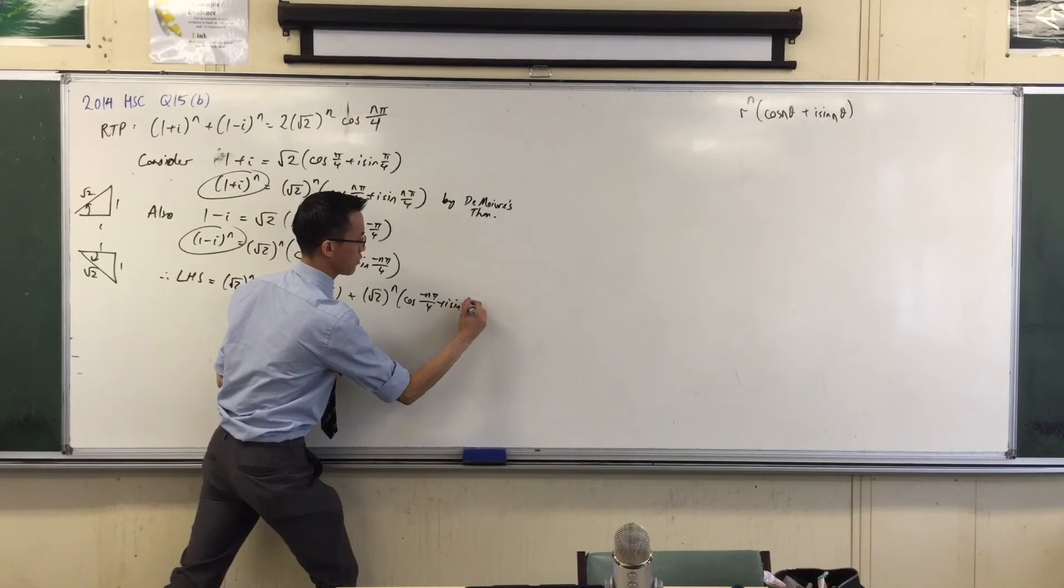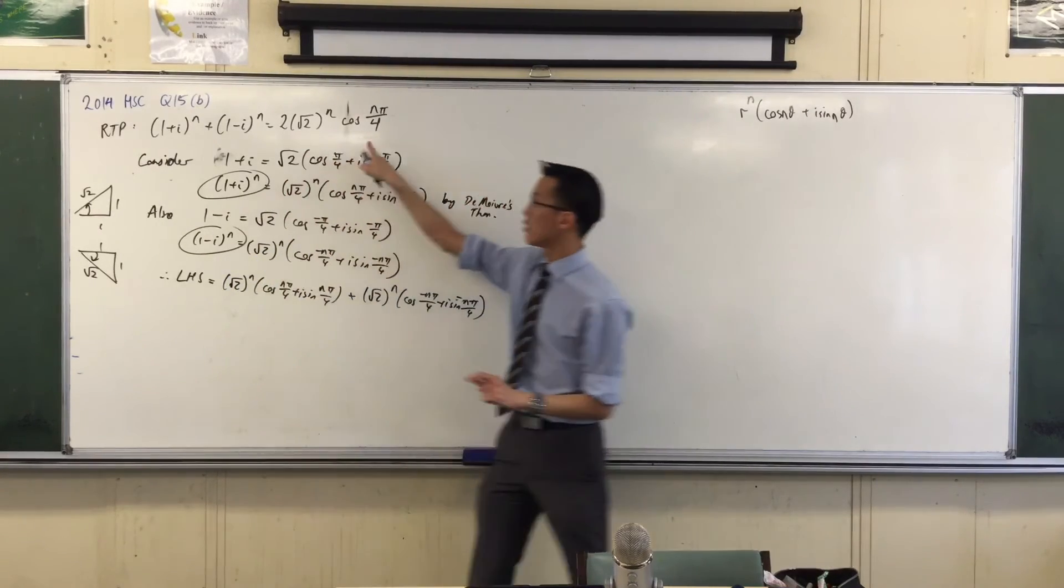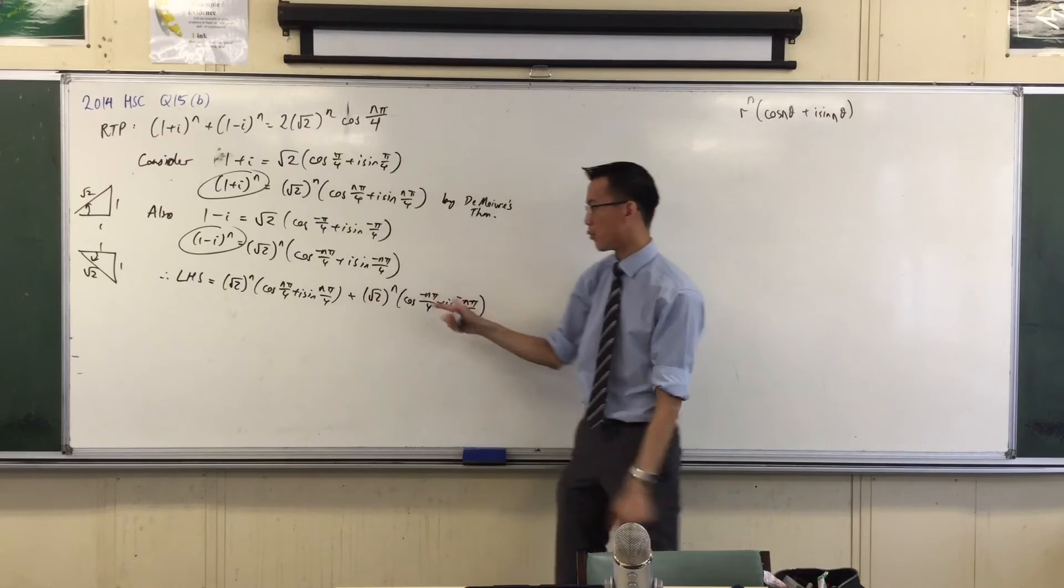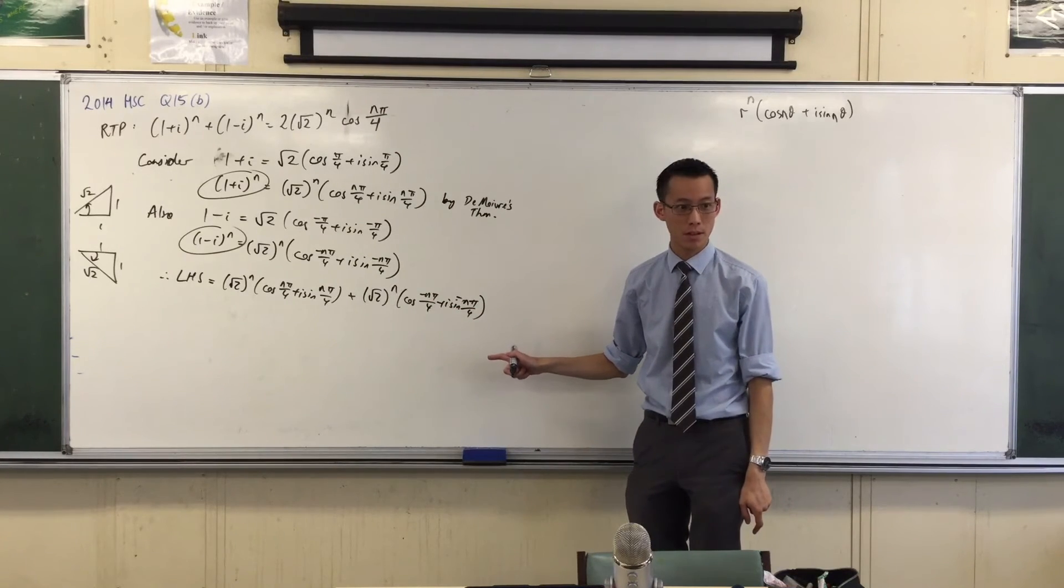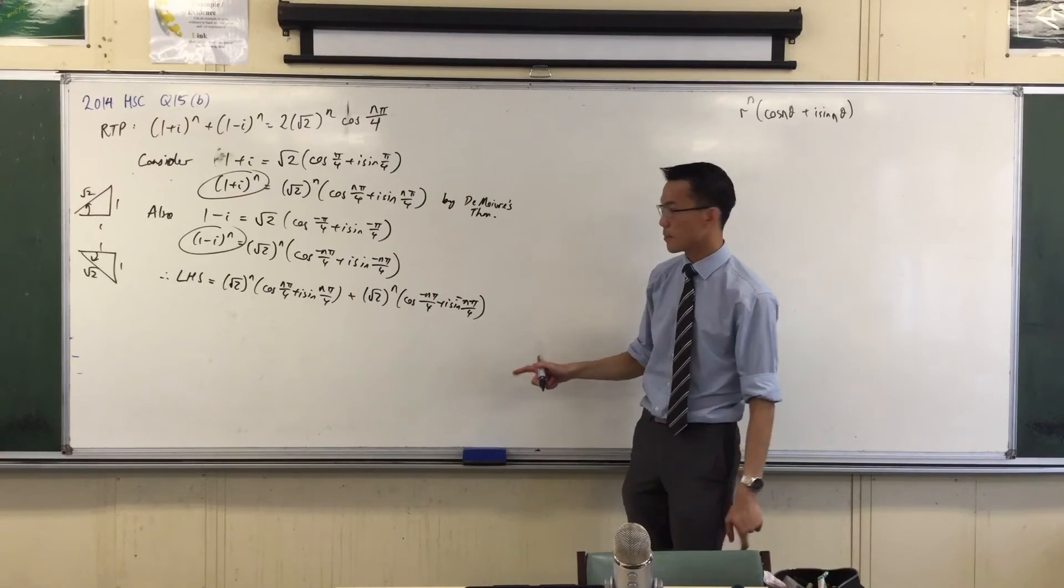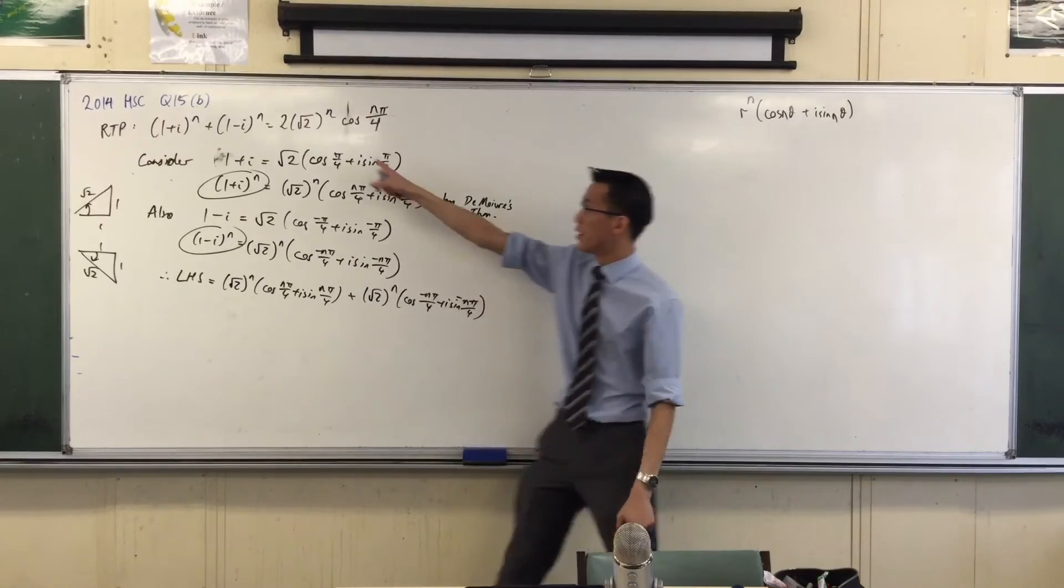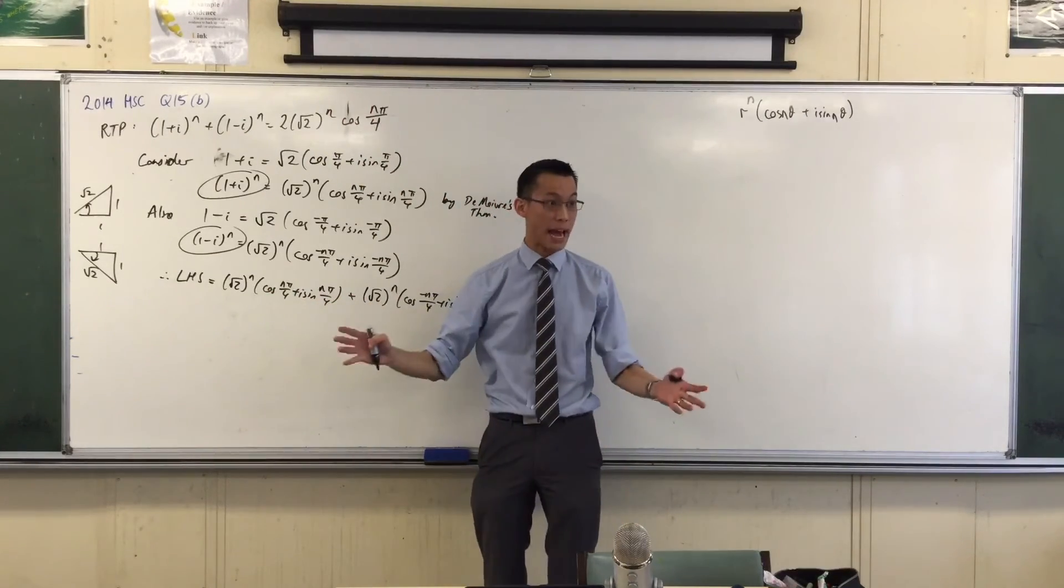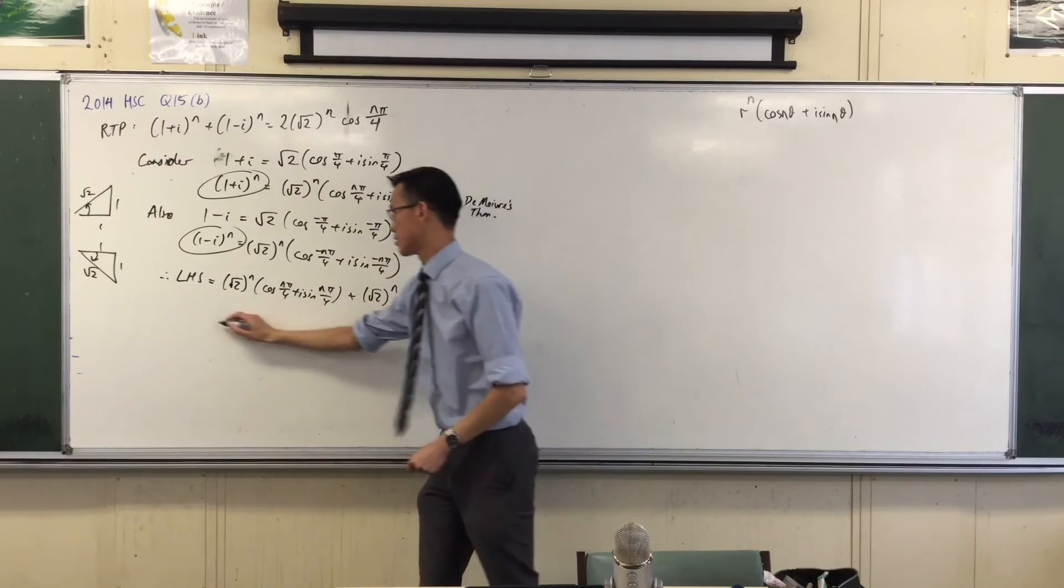Now, look, after you've, oh, minus. As soon as you write this, have a look at where you're headed. Have a look at the result you're headed towards. What's going to happen? What has to happen? Yeah, a few things have to happen. Well, number one, this root 2 to the n, it happens twice. Well, it had better happen twice, so I can factor it out. Let's do that. Then what's the next thing that has to happen?